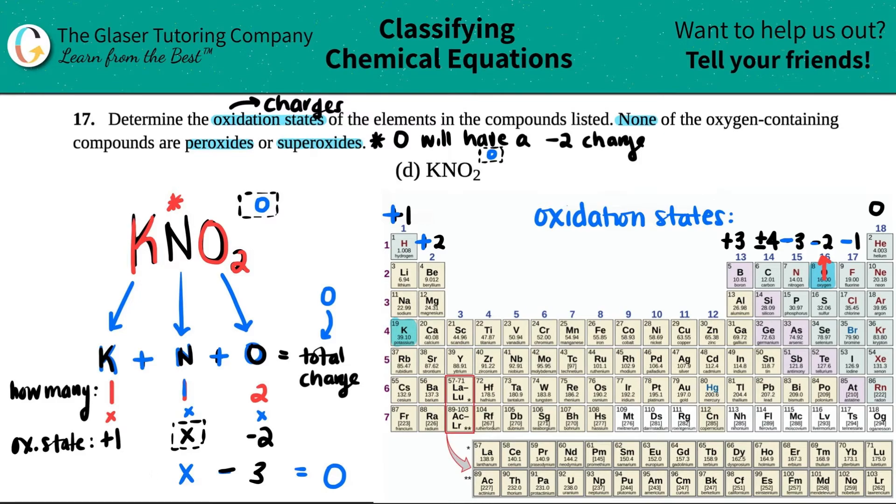And then we'll get rid of this and then just solve for x. Instead of minus 3, I'll do plus 3 on both sides, and that gives me x equals a +3. And that was nitrogen's charge. So in this case, it actually didn't go by the trend. Sometimes they're not going to go by the trend, so you have to solve with algebra.